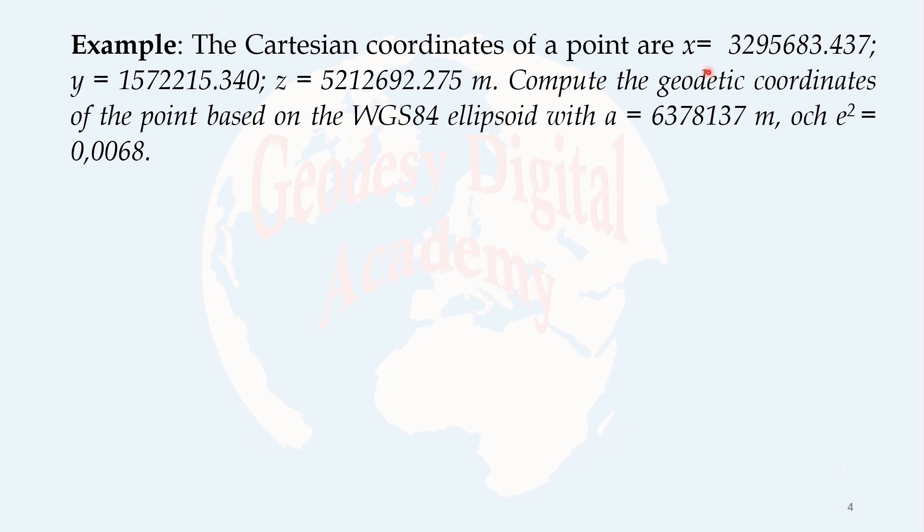Let us see this example. For example, we have Cartesian coordinates of a point. And we want to determine the geodetic coordinates over this ellipsoid, which has these parameters. So I do not solve lambda because it's too simple. You can do it yourself. The focus will be on phi and h. h0 is determined or computed by this formula. x coordinates, y coordinates, z coordinates are here. This is the semi-major axis of the ellipsoid. And this is the first eccentricity. And if we solve this numerically, we get this value.